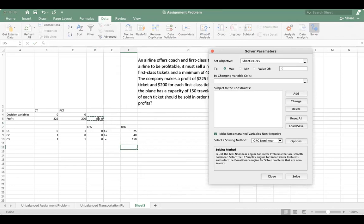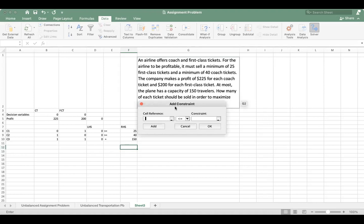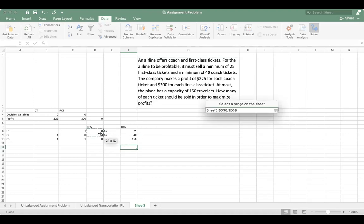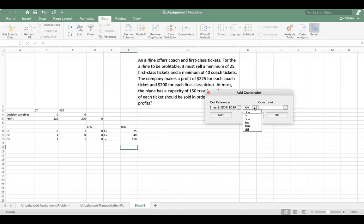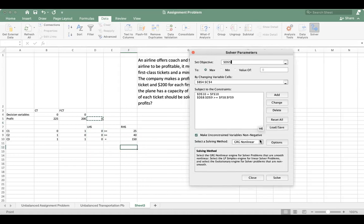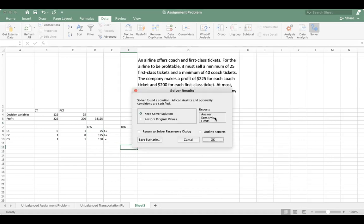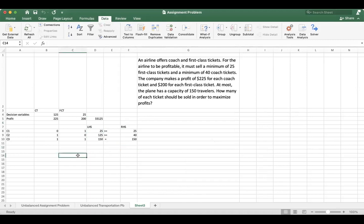I'll just open my Solver window. This is my set objective, that this would be my profit determined by our decision variables. This is our maximization problem, so I've chosen maximization. Now I'm choosing my variable cells. These are my variable cells and there are certain constraints available. We'll add the constraints so these values should always be greater than or equal to these two. I'll add one more constraint: this value is equal to 150 when we are assuming that our plane would be full. Now I will choose Simplex LP and I press solve.